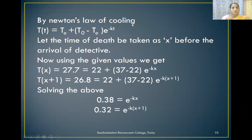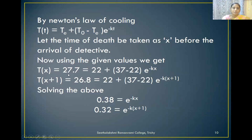Based upon Newton's law of cooling, we write the equation T(t), where capital T refers to temperature and small t refers to time. T(t) equals T_e plus (T₀ minus T_e) times e to the power of minus kt, where T₀ is the initial body temperature and T_e is the room temperature. Let the time of death be taken as x hours before the arrival of the detective. Using the given equation, T(x) equals 27.7, which equals 22 plus (37 minus 22) times e to the power of minus kx.